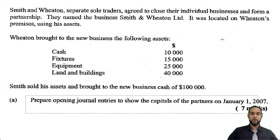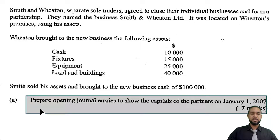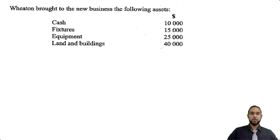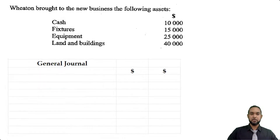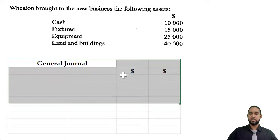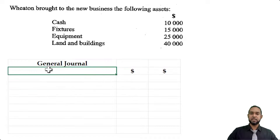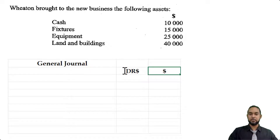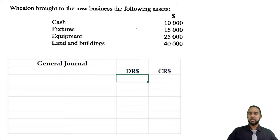The first thing we are required to do is prepare opening journal entries to show the capitals of the partners on January 1st, 2007. Let's pull up our general journal. I've done a bit of a scaled-down general journal, so you're not going to see a date column or a folio column. I will put in DR for debit and CR for credit just to help us out a little bit.